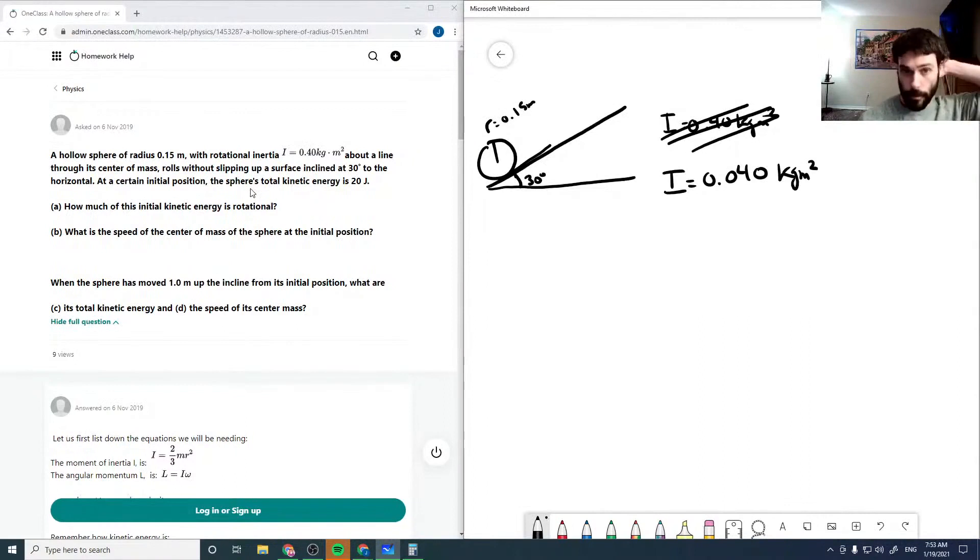Just because if you use the 0.40, you get a negative, the speeds the question gives can't possibly work, so it has to be 0.040.